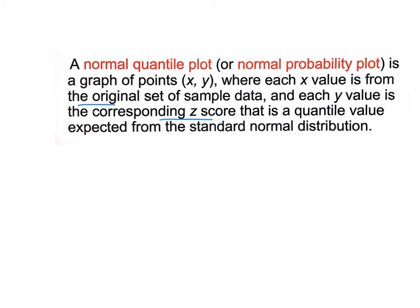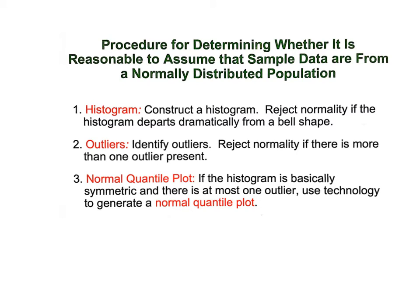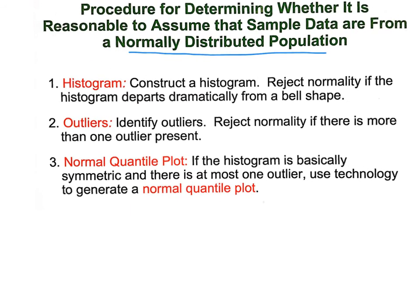Procedures for determining if it's reasonable to assume the sample data from a normally distributed population. Number one, we're gonna make a histogram with technology. Reject normality, which means it's not normal, if the histogram departs big time from a bell shape. And I mean big time. Some of them you're gonna find out your book uses words like is it reasonably close, and that's all it's gonna happen. Most time is if as long as it's reasonably close or there's a loose interpretation of a normal curve, then we're gonna go ahead and go with it.